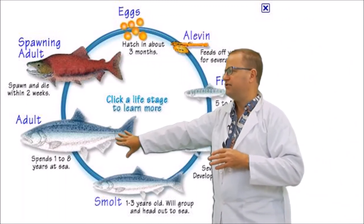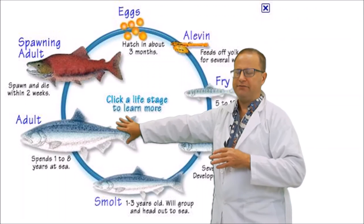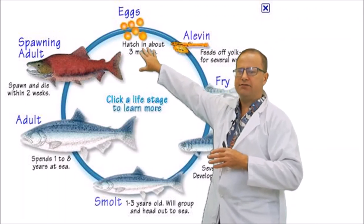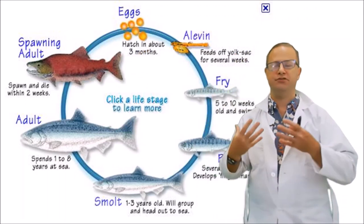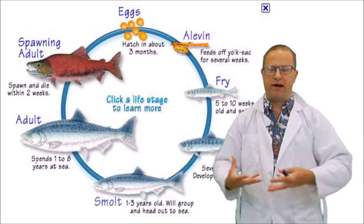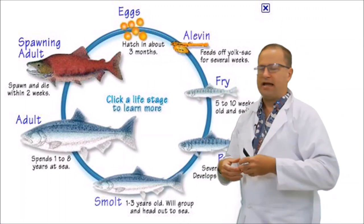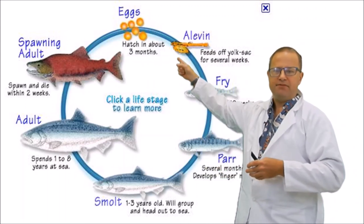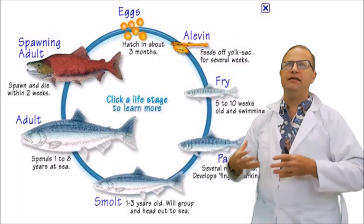So salmon and trout tend to spawn up in streams. We have our male and our female salmon, and they lay their eggs. The female lays her eggs, the male fertilizes those eggs, and those eggs remain in this nest which is called a redd. It's down in this big gravel bowl, and eventually those eggs hatch after about three months and become something called an alevin.